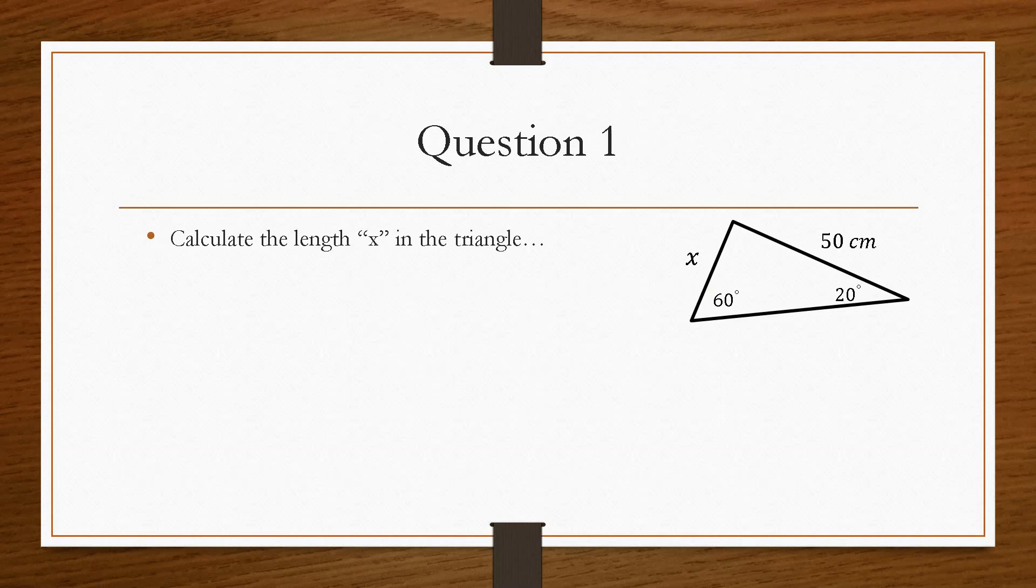So if we take a look at question 1, it asks us to calculate the length x in the triangle. It's given us this triangle here where we have the length x with a length of 50 centimeters, angle of 60 and an angle of 20. So the first thing that you do is write out the whole sine equation. The fundamental part of this is to label it and set it up properly.